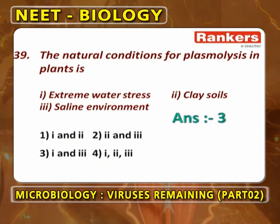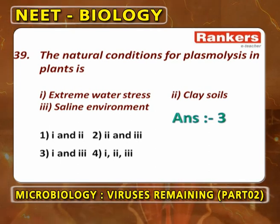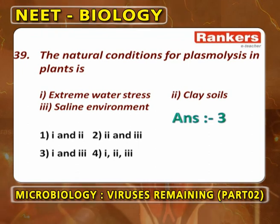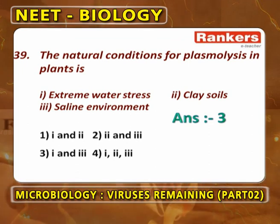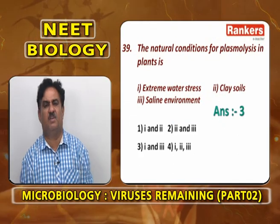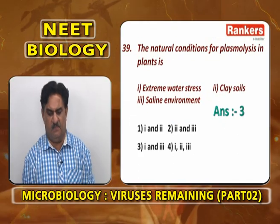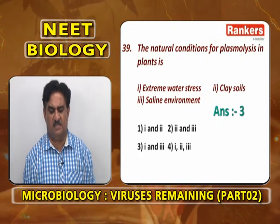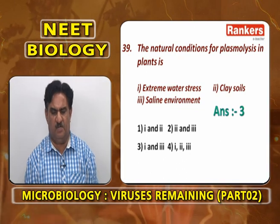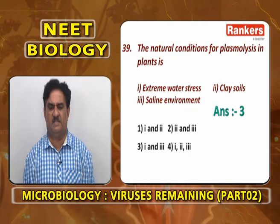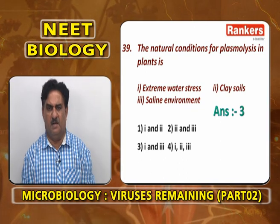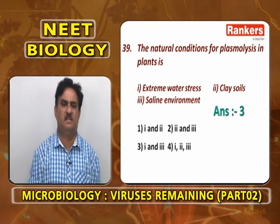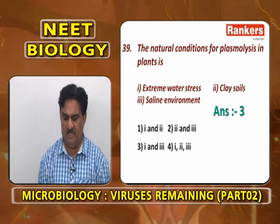The natural conditions of plasmolysis in plants: normally, plasmolysis does not occur in nature. Plasmolysis occurs only in special extreme conditions when there is a lot of heat and a saline environment. Extreme water stress does not directly cause plasmolysis; instead, it increases the amount of abscisic acid and removes potassium ions from the guard cells, resulting in stomatal closure.